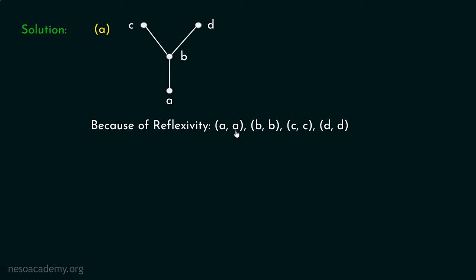Let's consider the first Hess diagram. This Hess diagram has four vertices representing elements A, B, C, and D. Because of reflexivity, (A,A), (B,B), (C,C), and (D,D) must belong to the partial order.